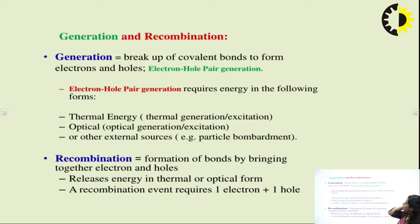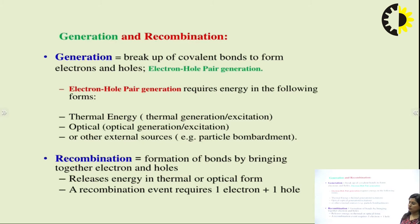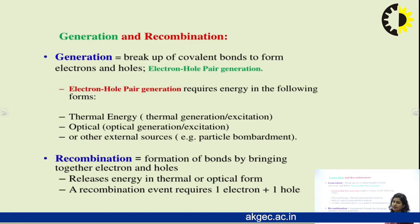Generation is basically the breakup of covalent bonds to form electrons and holes. When there is generation of electron-hole pair, there is a breakup of covalent bonds to form electrons and holes. Earlier the electrons and holes are in the form of light, but when they break up their bonds they create electron and hole pair generation, also known as EHP generation or EH pair generation.